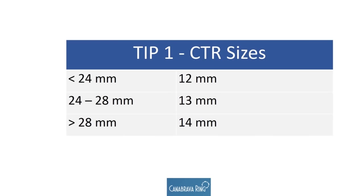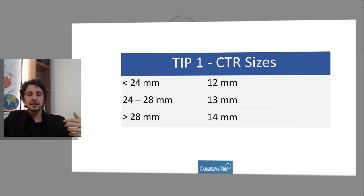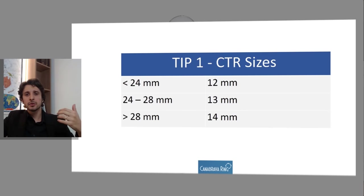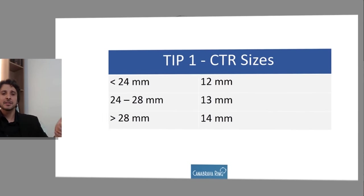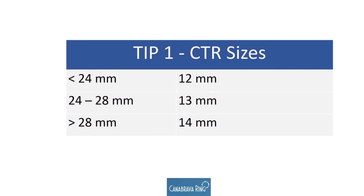Tip one: CTR size is important. In eyes smaller than 24 mm, you can use a CTR with 12 mm. In eyes between 24 and 28 mm, you can use a CTR with 13 mm. In eyes bigger than 28 mm, you can use a CTR with 14 mm.